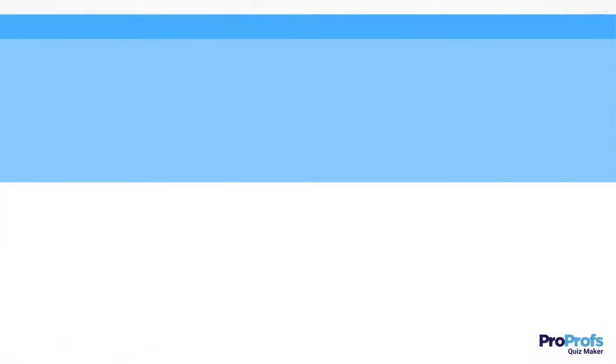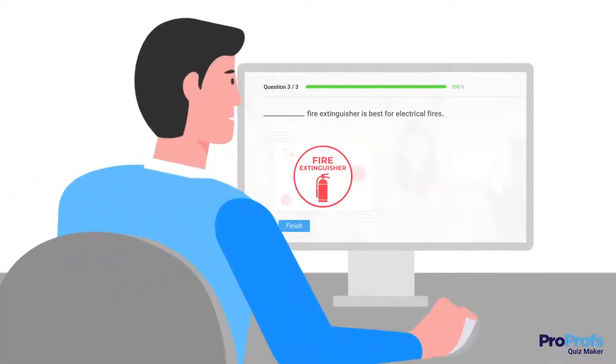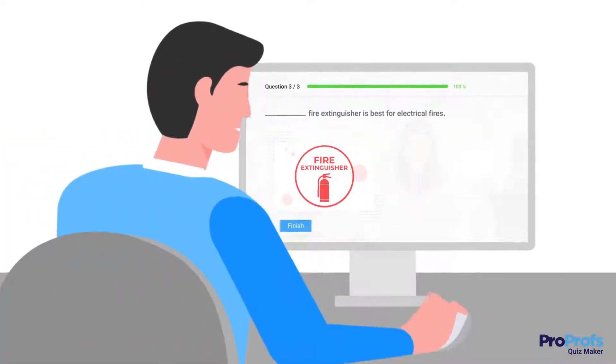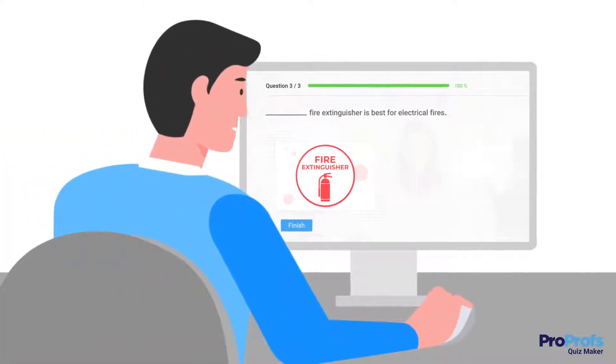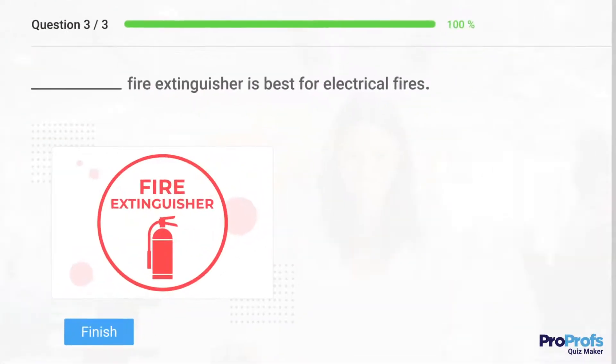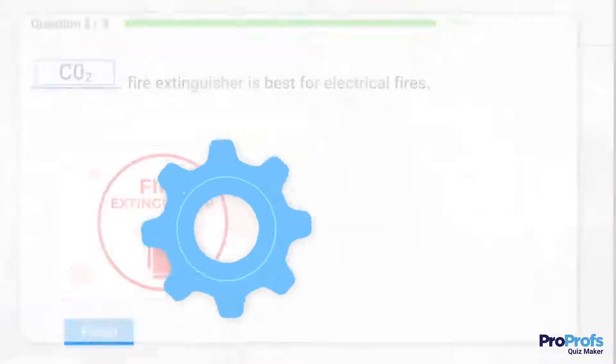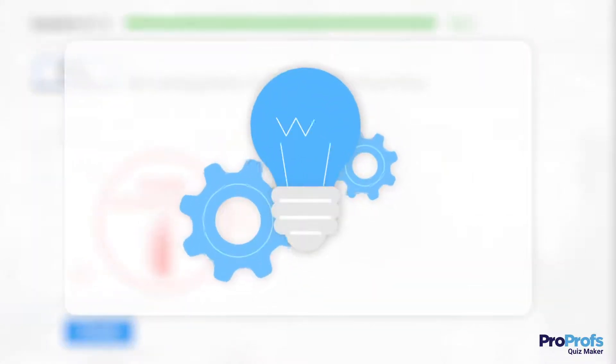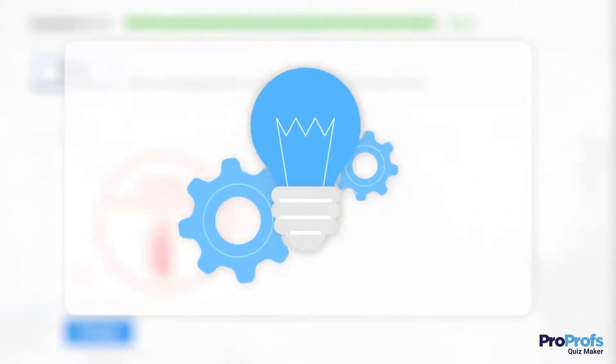Fill-in-the-blank questions are a great way to check the ground reality of knowledge retention. It's a highly useful question type for recruiters, teachers, and trainers. A fill-in-the-blank question requires learners to finish an incomplete sentence by providing an absolute answer in the blank space, which requires quiz-takers to have a strong recall ability.